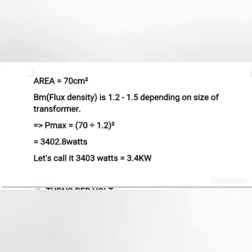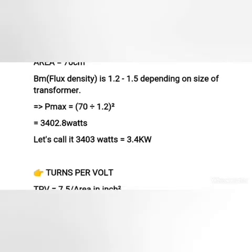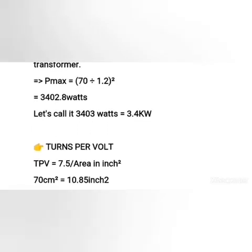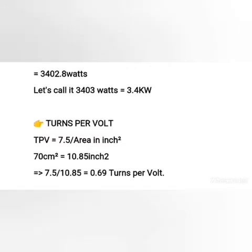The next thing is to find our turns per volt. The formula is 7.5 over area in inches squared. We know our area in centimeters squared is 70, so we convert from centimeter squared to inch squared, which gives us 10.85 inch squared. So 7.5 over 10.85 gives us 0.69 turns per volt. Some people ask how we got 7.5 — it's actually a constant, and for convenience it's always better to substitute with that value.